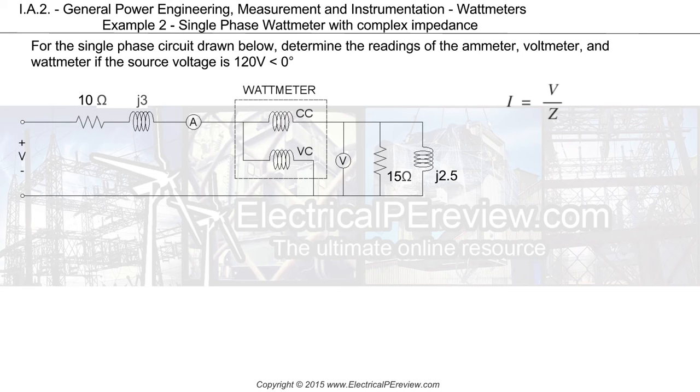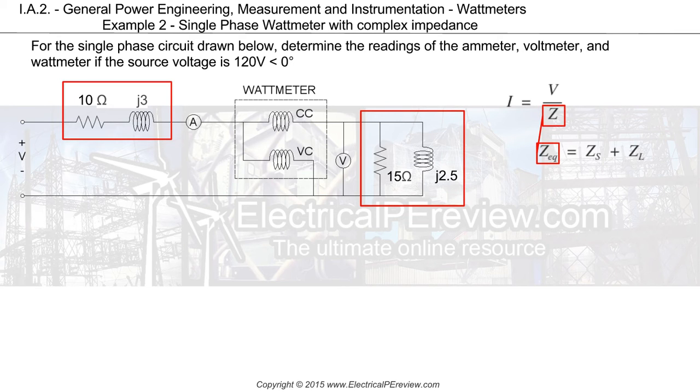We're going to define our current as total voltage divided by total system impedance. To find our total circuit impedance, we'll need to combine both our series impedance and parallel impedance.